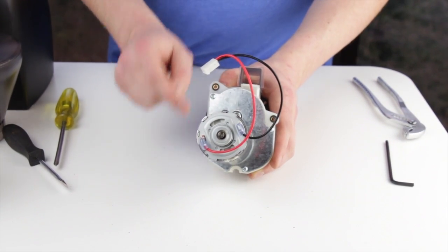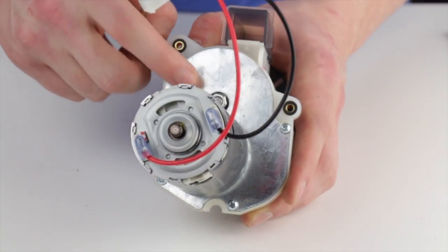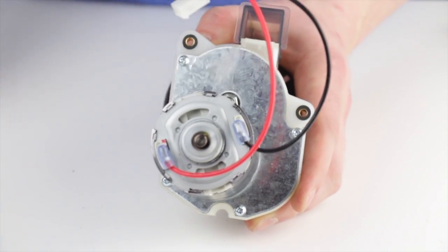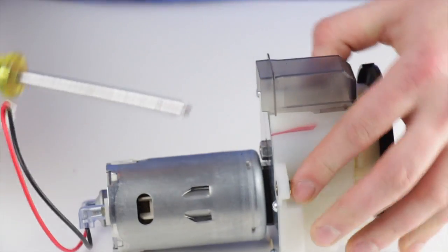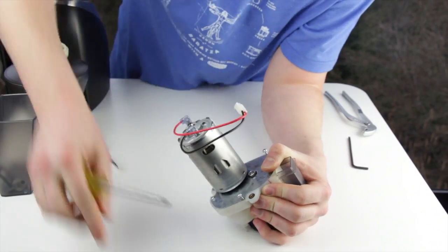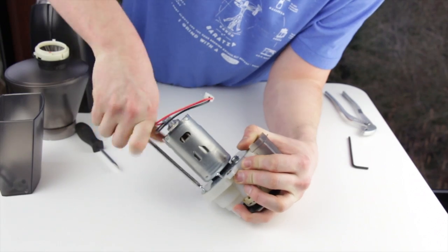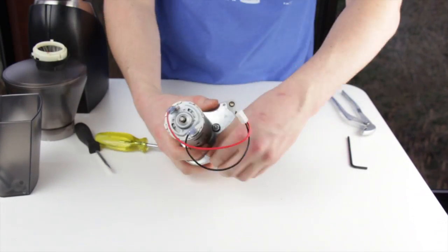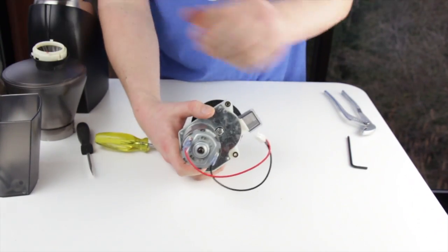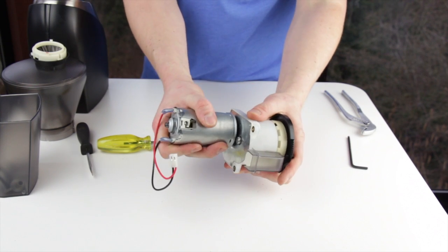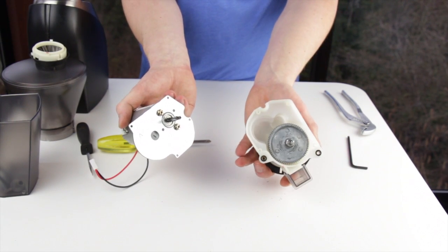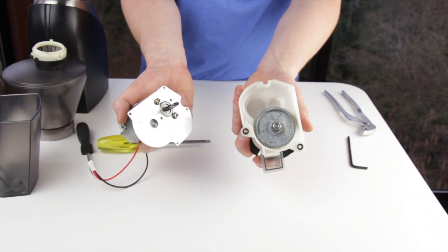Next we're going to remove the four Phillips screws that hold the motor plate to the white gearbox housing. With the four screws removed, the motor and motor plate will split apart from the gearbox housing.